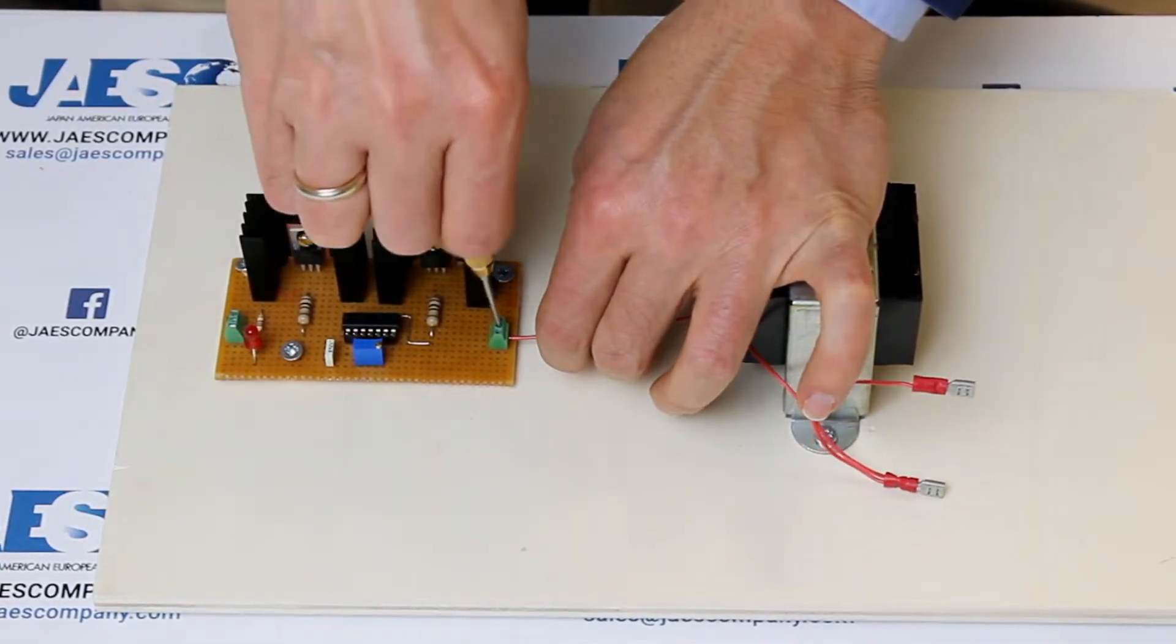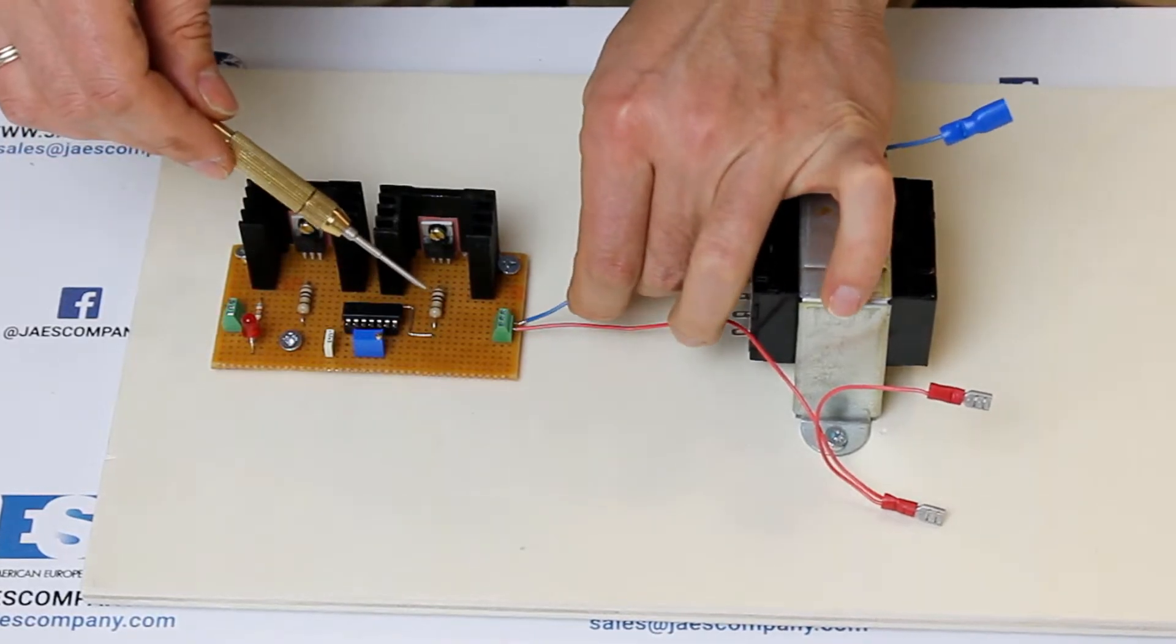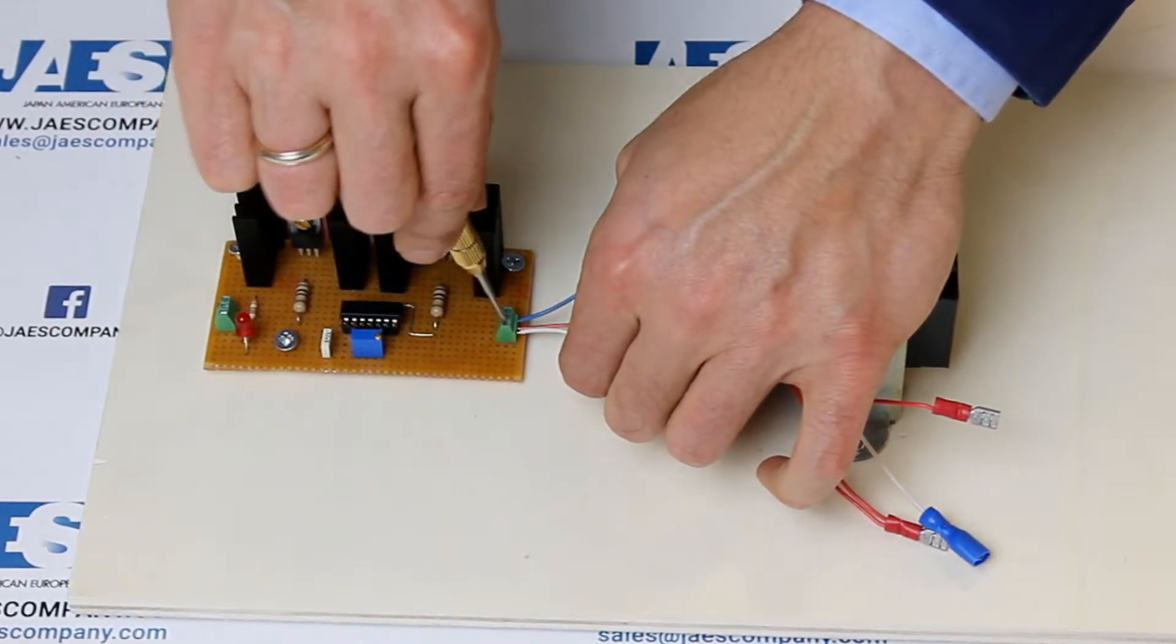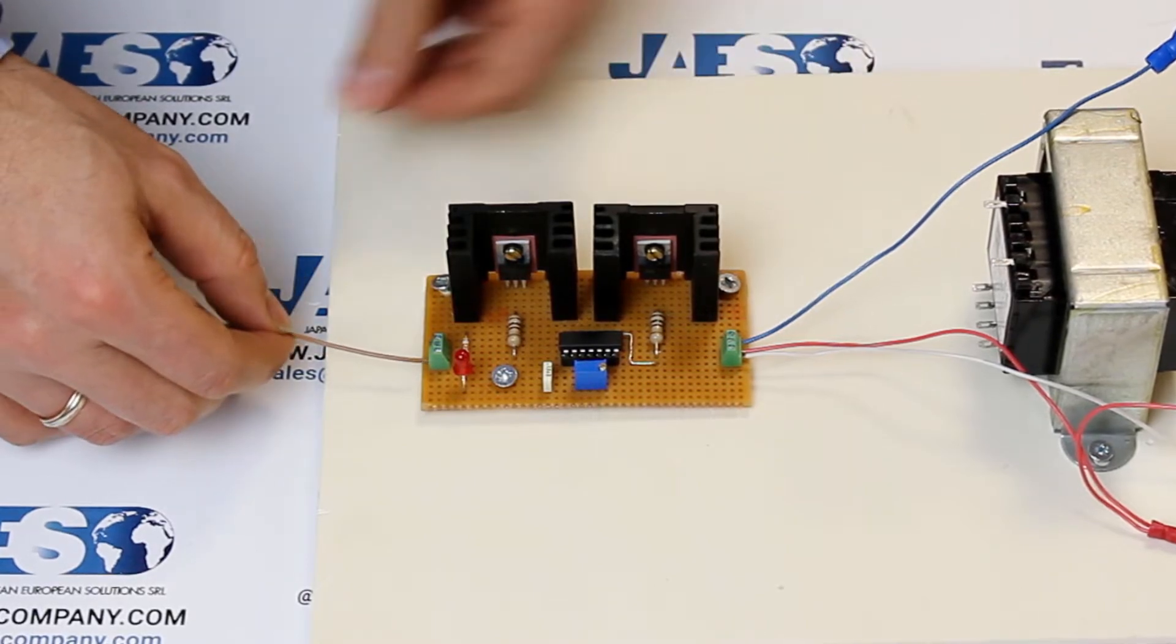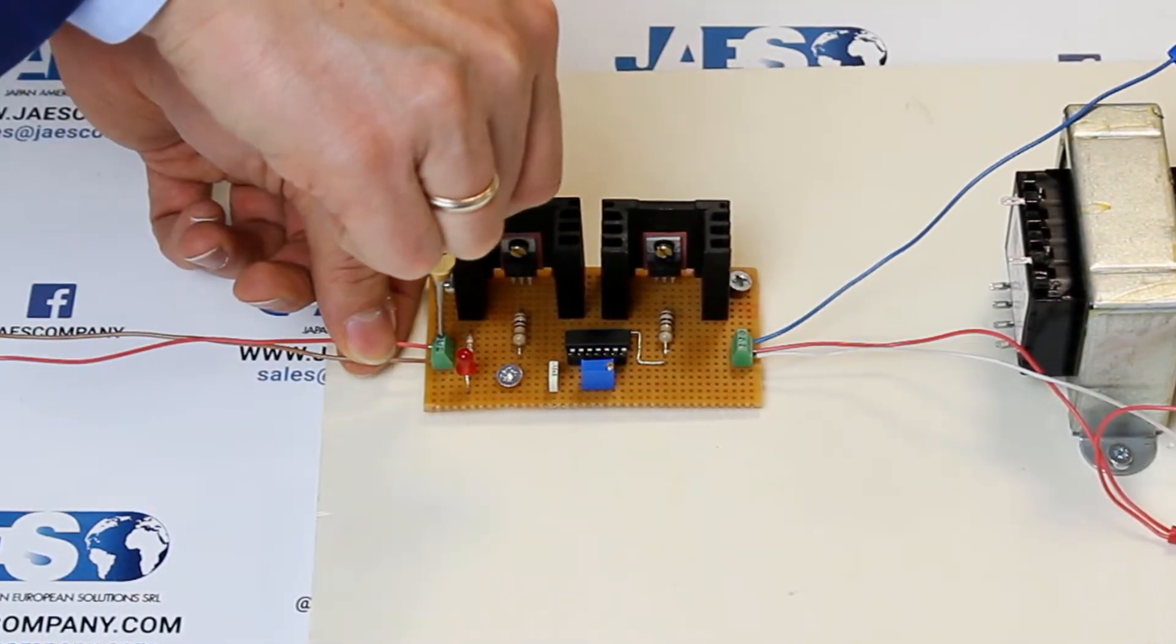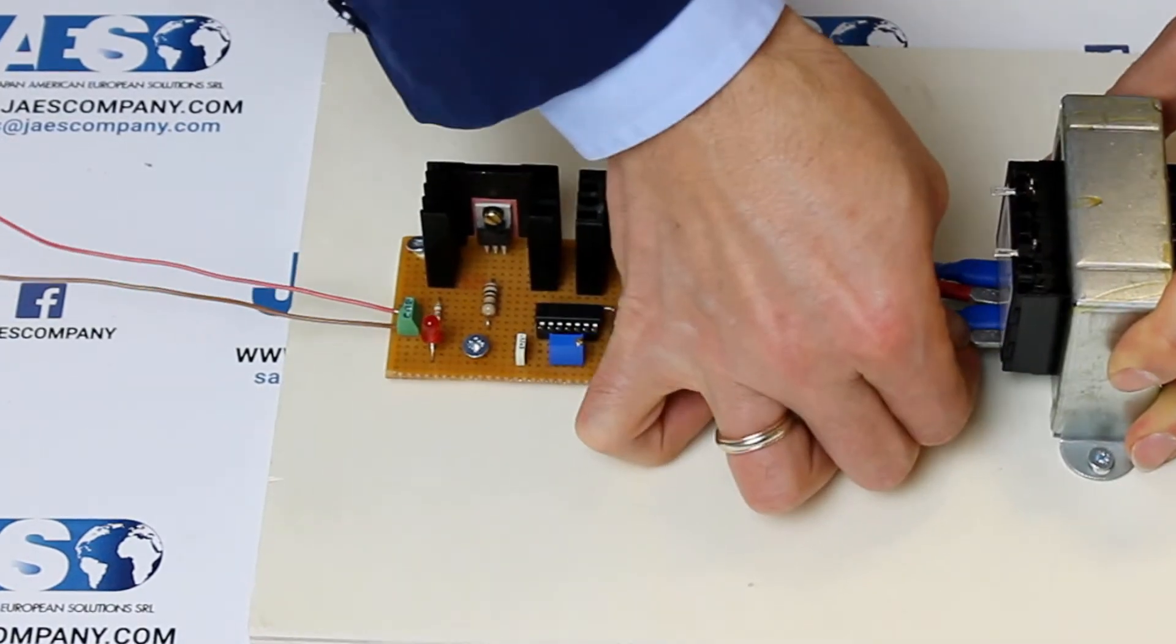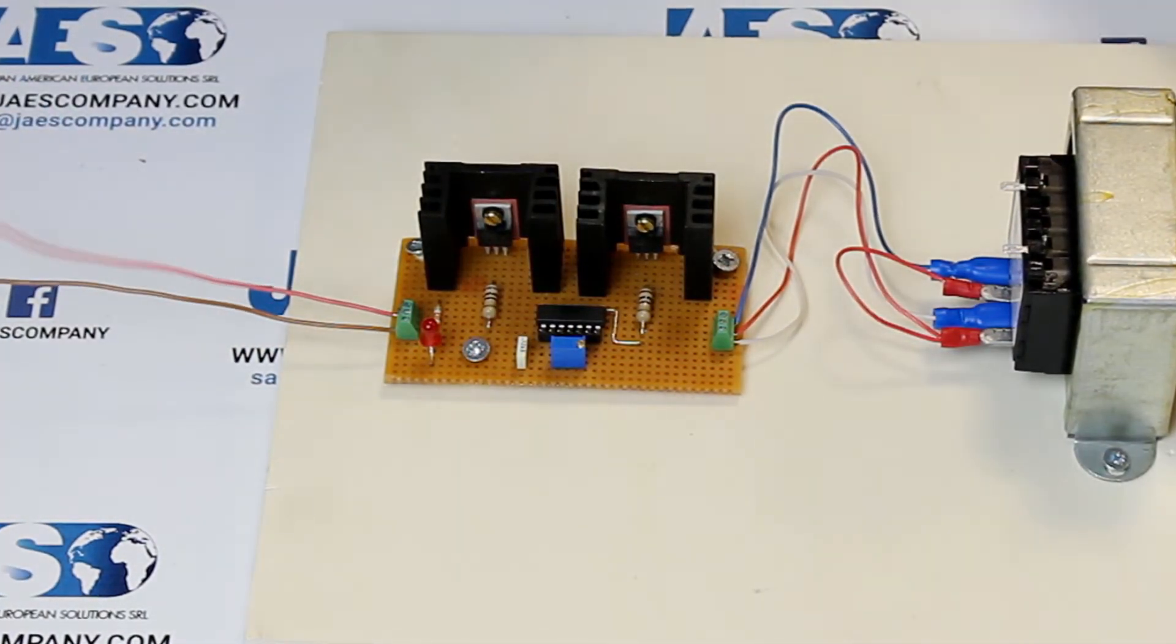Now we can connect our circuit to the transformer. We insert the power cables that will be connected to the battery in this way. We connect the transformer output to a terminal board where we will then place the load represented by the light bulb.